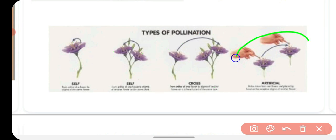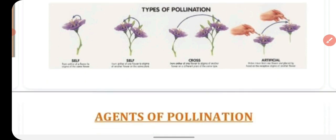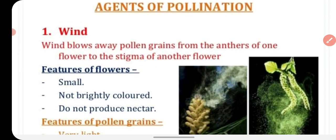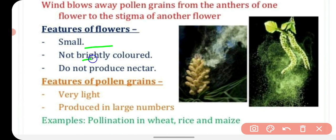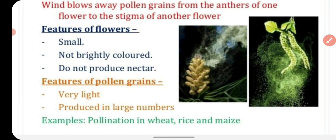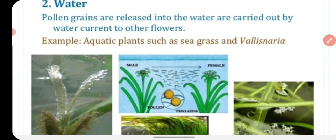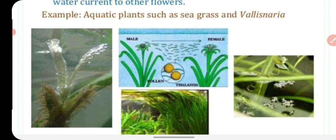Pollination can also be done artificially. Agents of pollination in nature include wind, which blows pollen grains from the anther to the stigma. Wind-pollinated plants include wheat, rice, and maize. Pollen grains in wind-pollinated plants are produced in large numbers. Water is another agent — pollen grains are released into water and carried by water currents to other flowers, as seen in sea grass.